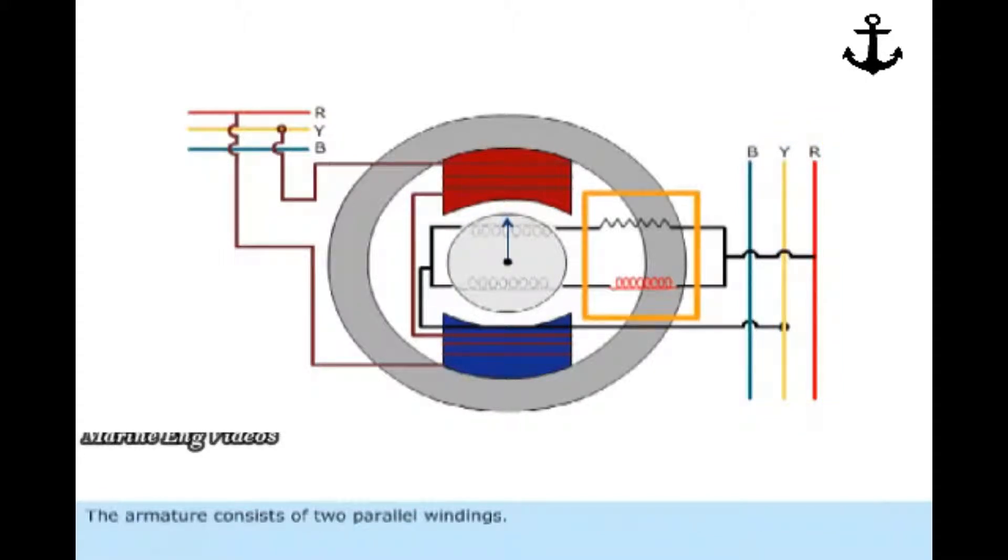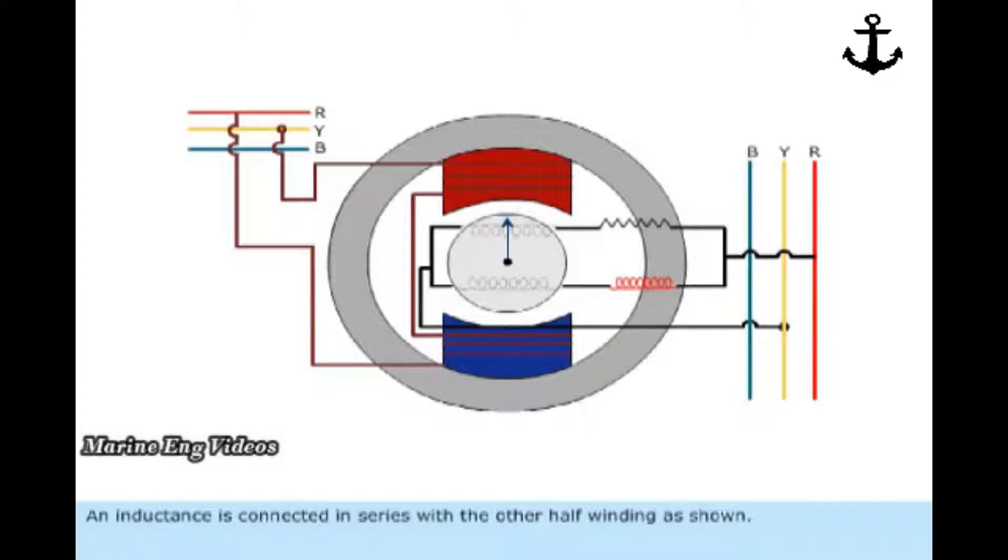The armature consists of two parallel windings. A resistance is connected in series with one half winding. An inductance is connected in series with the other half winding as shown.